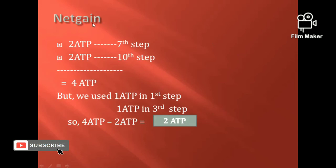In the seventh step and tenth step, 2 ATP each are produced, giving a total of 4 ATP produced. After subtracting the 2 ATP used in the first phase, there is a net gain of 2 ATP.